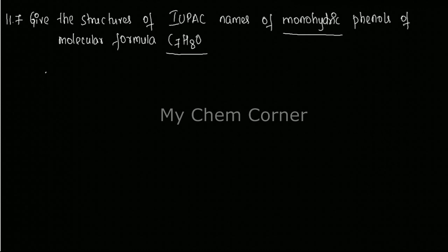So when I draw the structure, I have phenol here - this is a phenolic structure with all six carbons in the ring. That one extra carbon goes as a substituent.